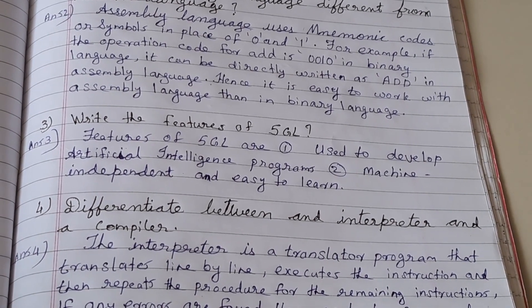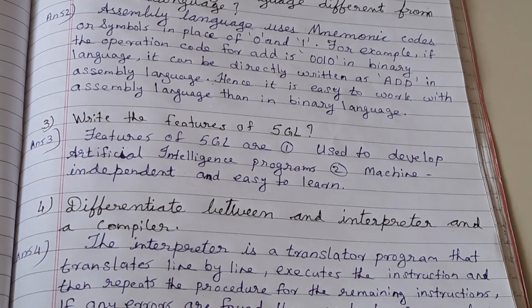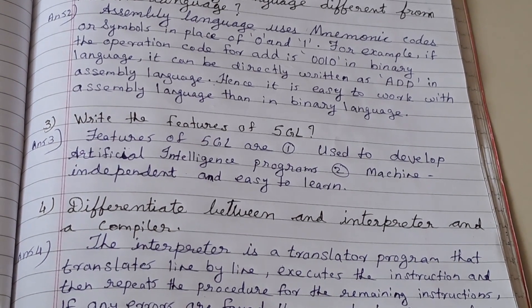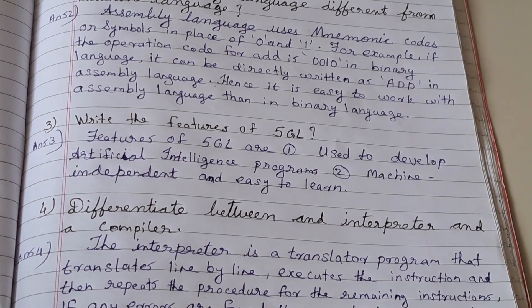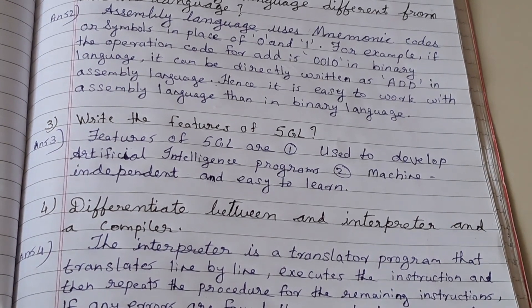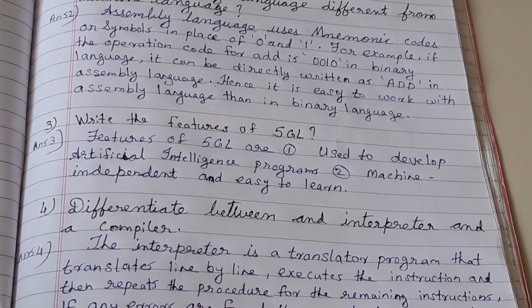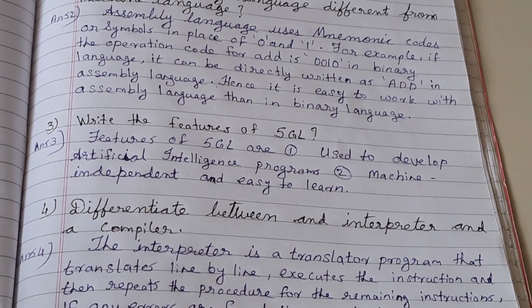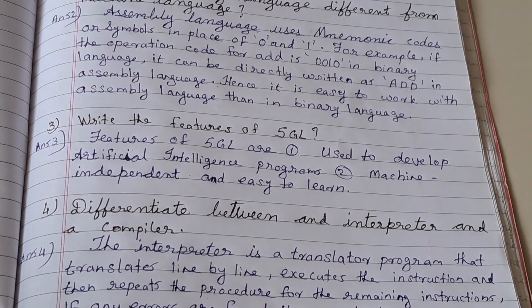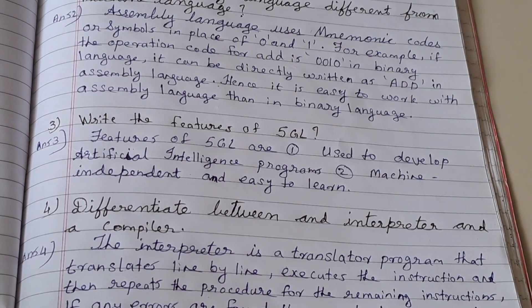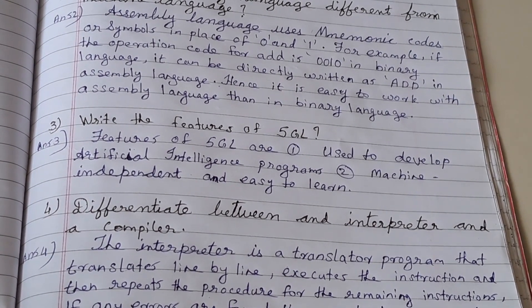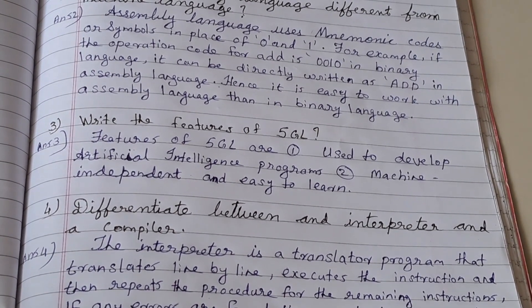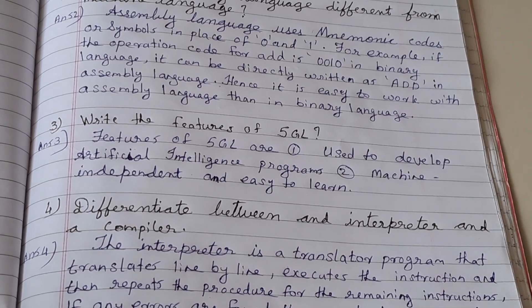Write the features of 5GL. Features of 5GL are: first, used to develop artificial intelligence programs; second, machine independent and easy to learn.